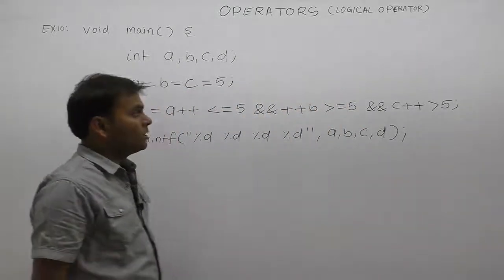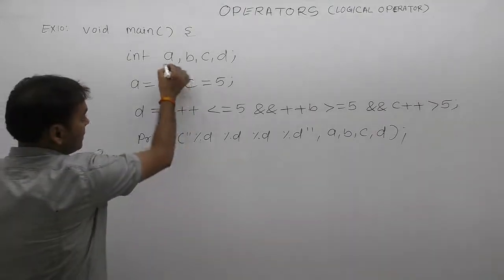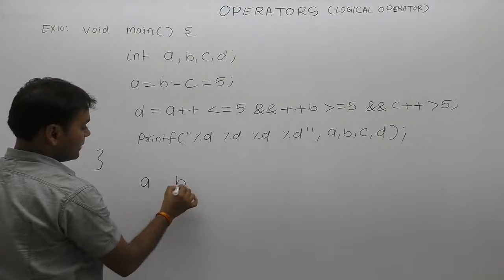Next example regarding logical operations. We are declaring four variables: a, b, c, d. There are four variables: variable a, b, c, d.